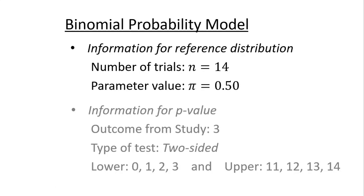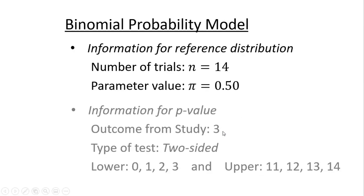This short video will show you how to construct the binomial probability model in Google Sheets. The reference distribution that will be constructed here will be for the number of trials n equal 14 and a parameter value of pi equal 0.50. We will also obtain a p-value for the WSU vitamin A study of the males. The outcome from that study was a 3, and the type of test was two-sided.